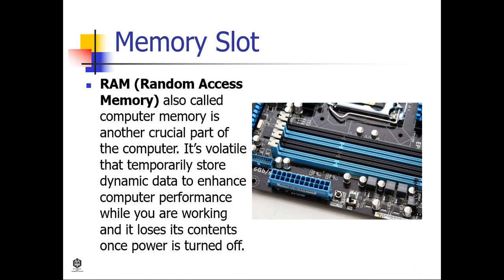Memory slots — Random Access Memory, also called computer memory — is another crucial part of the computer. It's volatile, meaning it temporarily stores dynamic data to enhance computer performance while you are working, and it loses its contents once power is turned off. The memory slots are where we insert the RAM. Most motherboards have two to four memory slots, which determine the type of RAM used with the computer. The most common types of RAM are SDRAM and DDR for desktop computers, and SODIMM for laptop computers, each having various types and speeds.